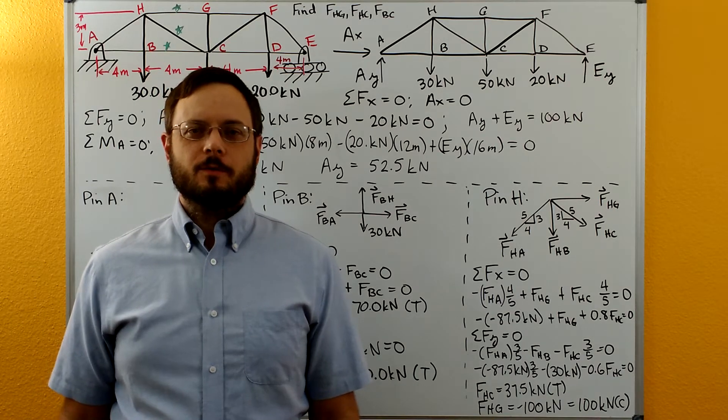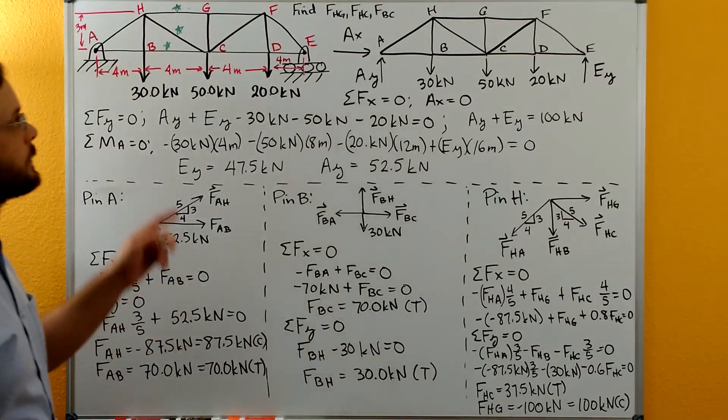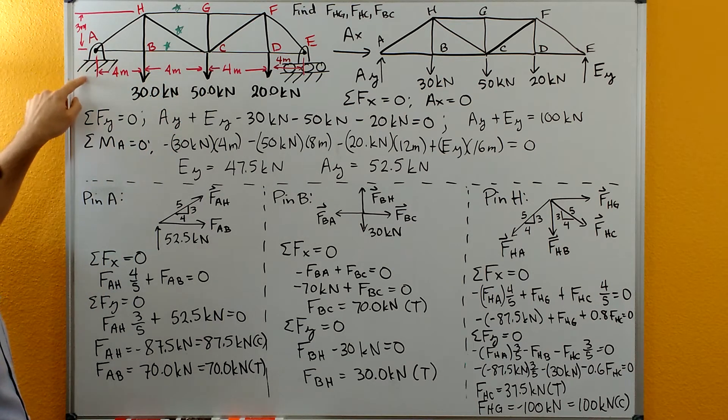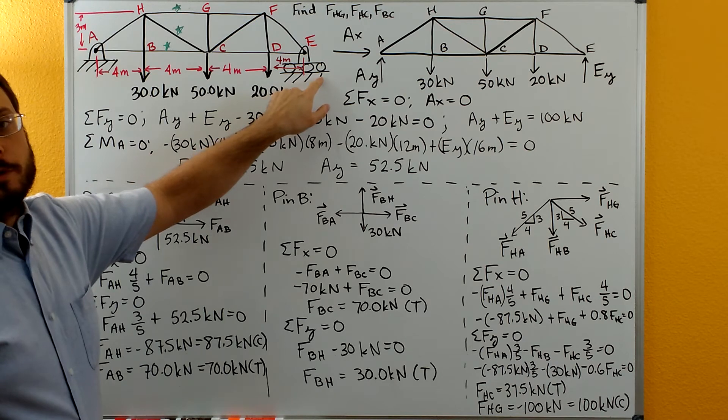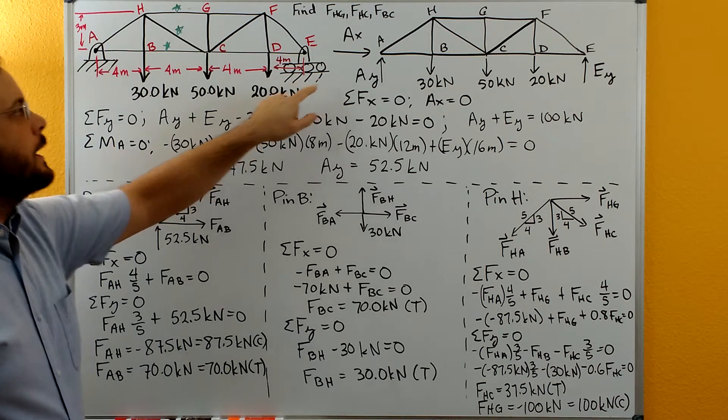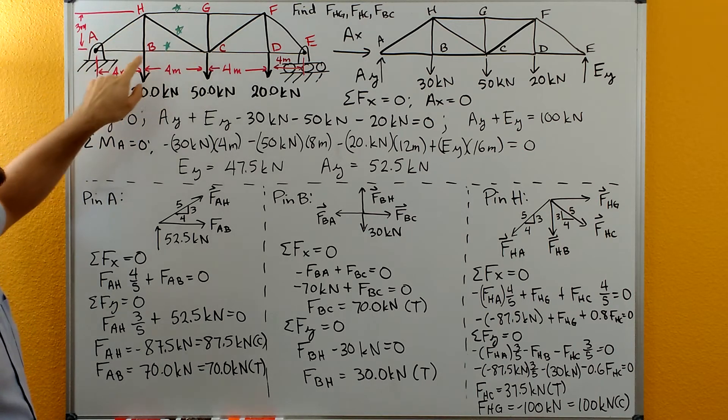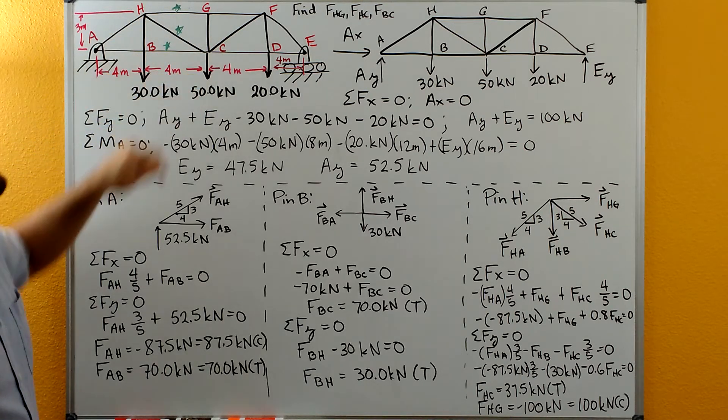Hi, welcome to the statics tutorials. With this problem we have a truss that has a pin at A and a smooth frictionless roller at E. We need to find the forces in members HG, HC, and BC here.